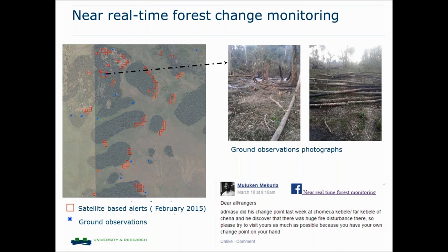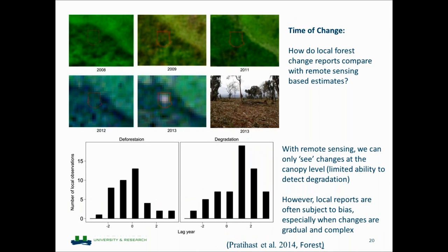Regarding the quality of community-collected data, especially temporal quality — which is quite important for activity data monitoring: we tried to interpret very high-resolution satellite imagery with local data to distinguish deforestation and degradation events. We found that remote sensing was one or two years earlier than local communities in reporting deforestation, whereas in degradation, local people reported one or two years earlier than remote sensing. Degradation makes sense because people are on the ground — for remote sensing it takes time until canopy openness can be detected.